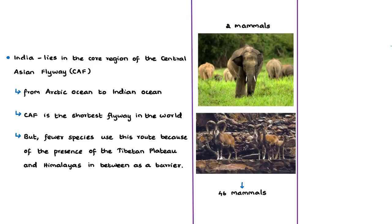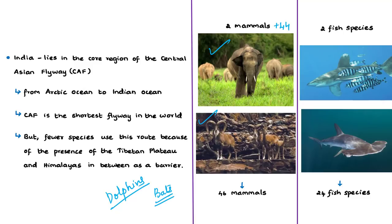Apart from birds, the CMS appendices also cover mammals, fish species, and reptiles. Among mammals, the largest migratory group is bats, belonging to the family Vespertilionidae, and the second largest is dolphins, with nine migratory species listed. Before COP 13, 44 mammals from India were listed in CMS; with the addition of Asian elephant to Appendix 1 and Uriel to Appendix 2, the number has become 46.